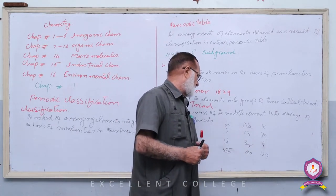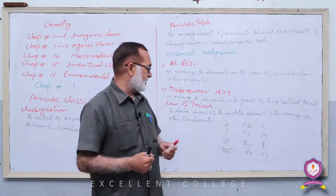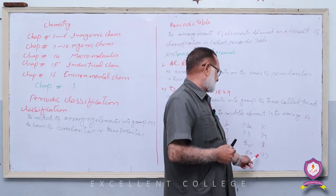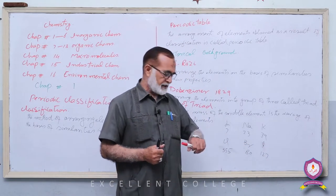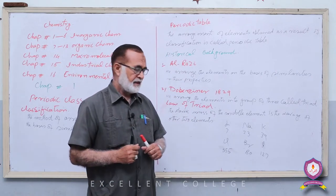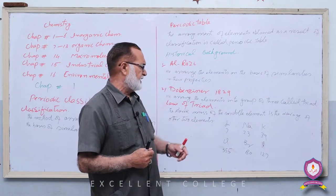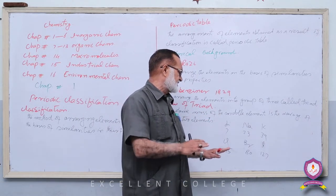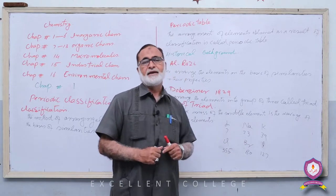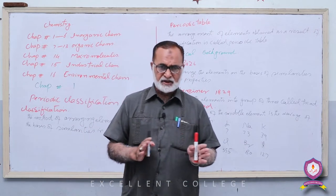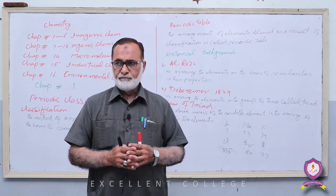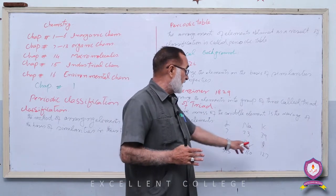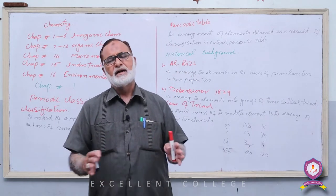دوسری example: Chlorine, Bromine, and Iodine۔ Chlorine کا atomic mass 35.5 ہے، Iodine کا 127 ہے — ان کی average approximately 81 آتی ہے، اور Bromine کا atomic mass 80 ہے جو roughly same ہے۔ اس تین کے set میں بھی middle element کا atomic mass باقی دونوں کی average کے برابر ہے — that is also called a Triad۔